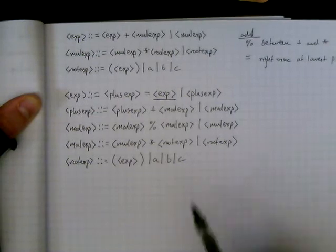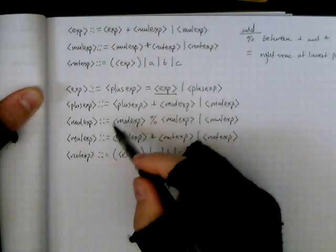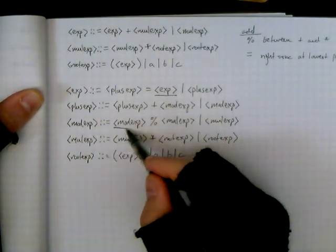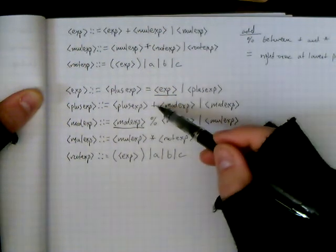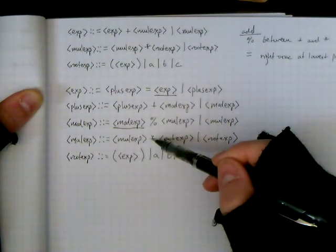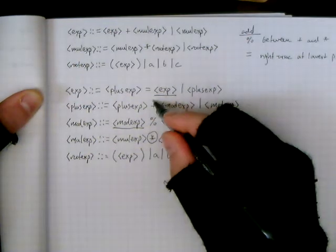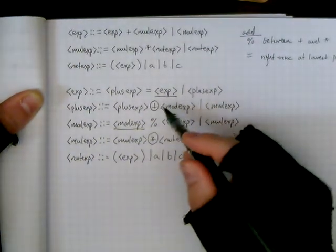And so, we add in our new one, mod, which is left associative, and it's in between the precedence levels of multiplication and addition, right?